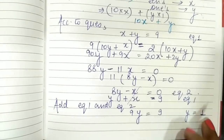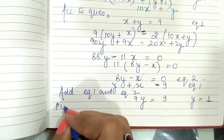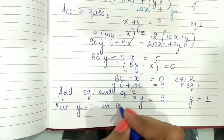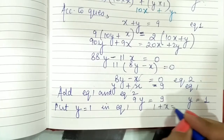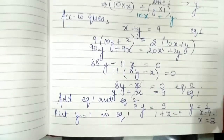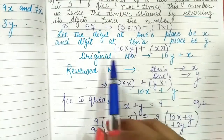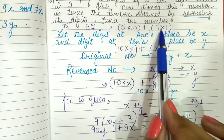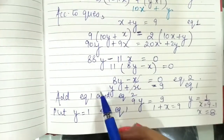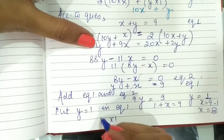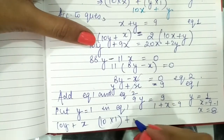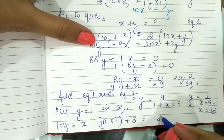Putting y equals 1 in equation 1: 1 plus x equals 9, so x equals 8. The original number is 10y plus x, which is 10 into 1 plus 8, giving the number 18.